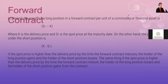On the other hand, the payoff under the short position is K minus ST, where K is the delivery price and ST is the spot price. To be clear: if the spot price is higher than the delivery price by the time the forward contract matures, the holder of the long position gains and the holder of the short position losses.